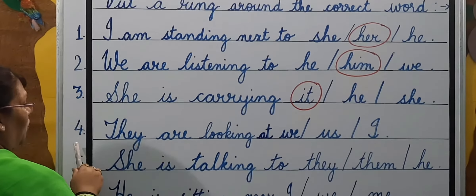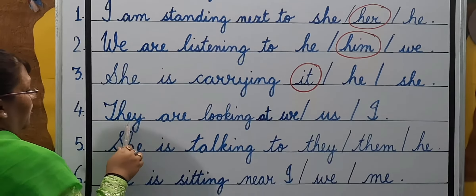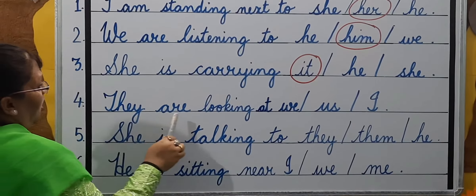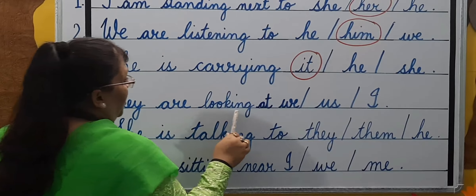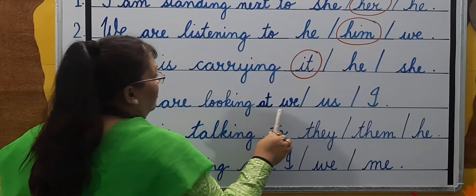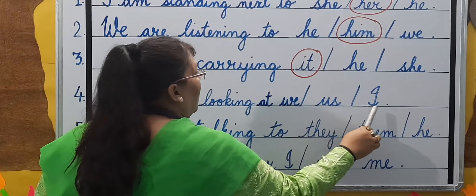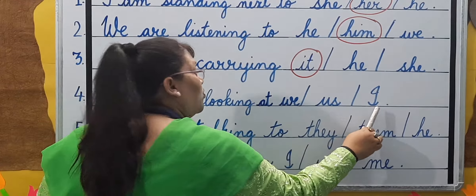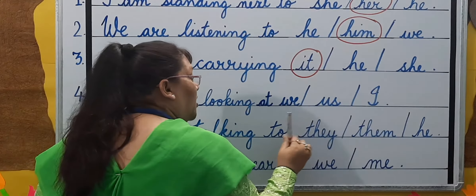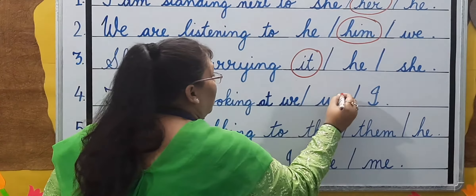Number four: They are looking at — we, us, or I? The correct answer is: us.